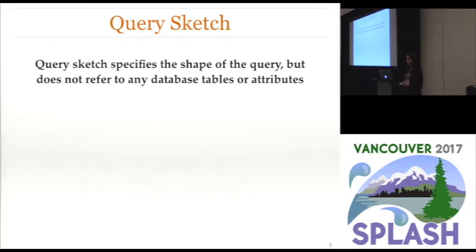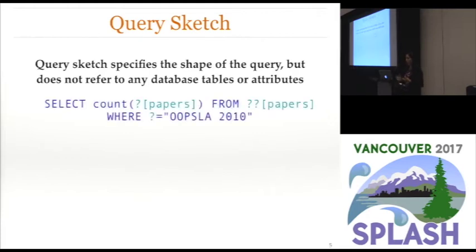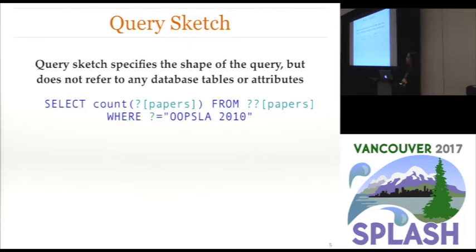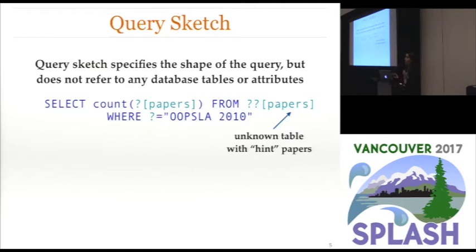A query sketch is a formal representation that specifies the shape of the query, but does not refer to any database tables or attributes. For instance, here's an example of a very simple query sketch. We've fixed the shape of the query to be of the form SELECT FROM WHERE, we're using the COUNT aggregate function, and we've fixed the WHERE clause to be of the form 'some attribute equals the string OOPSLA 2010.' There are also unknowns in this sketch — question marks refer to unknown attributes, and there's an unknown table. Furthermore, the sketch has natural language hints associated with each hole, and whatever fills the hole should have similarity to that hint.